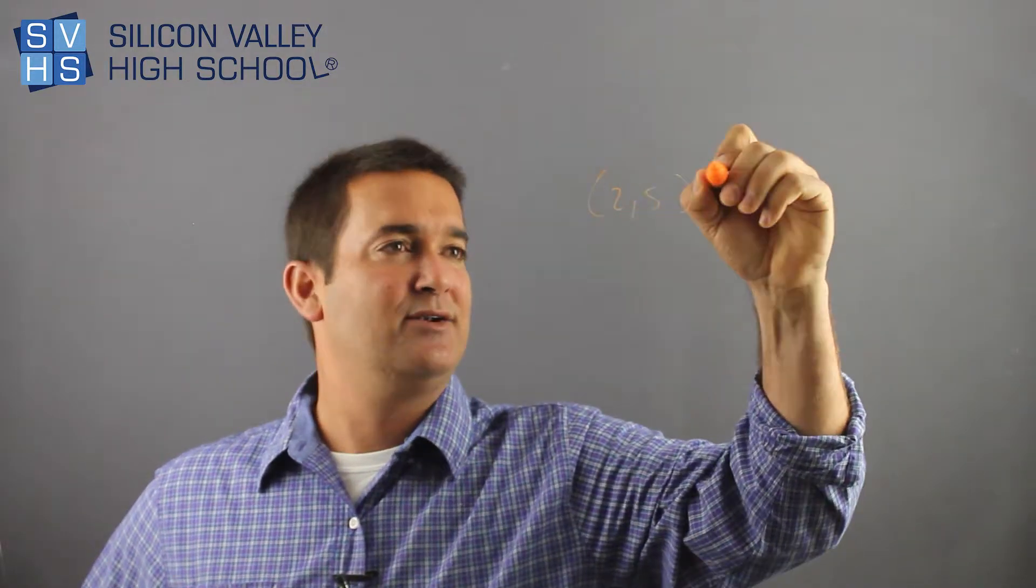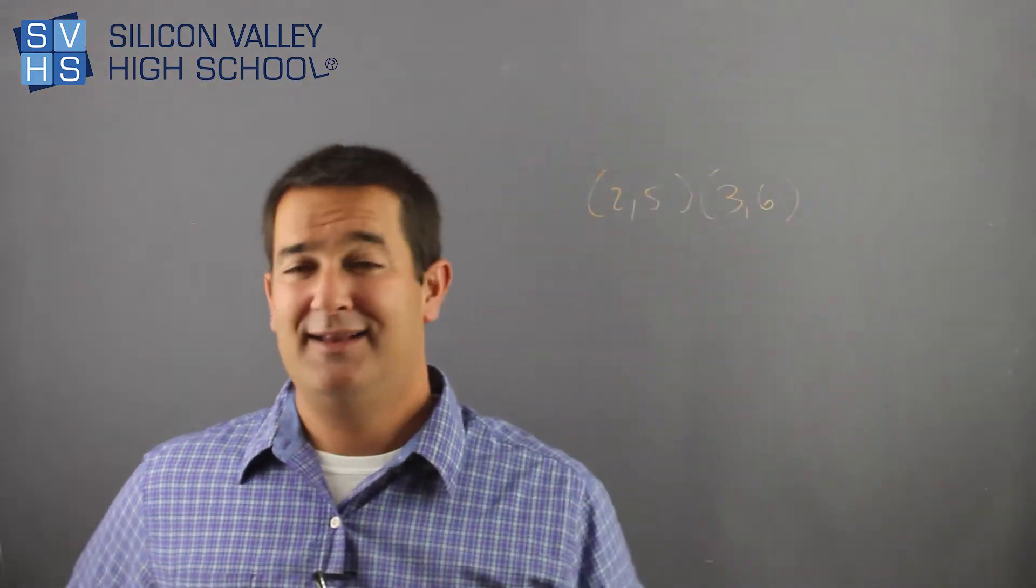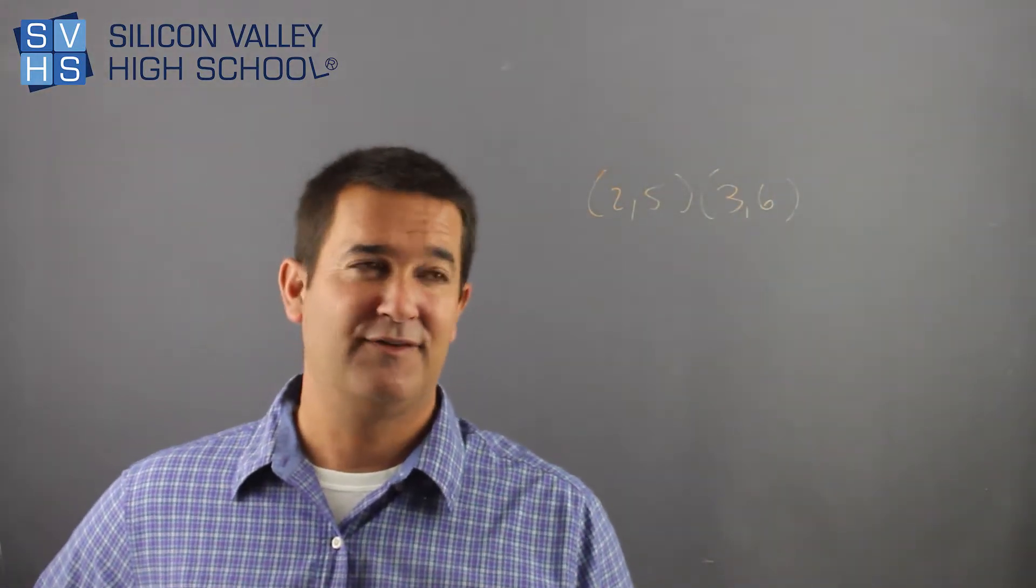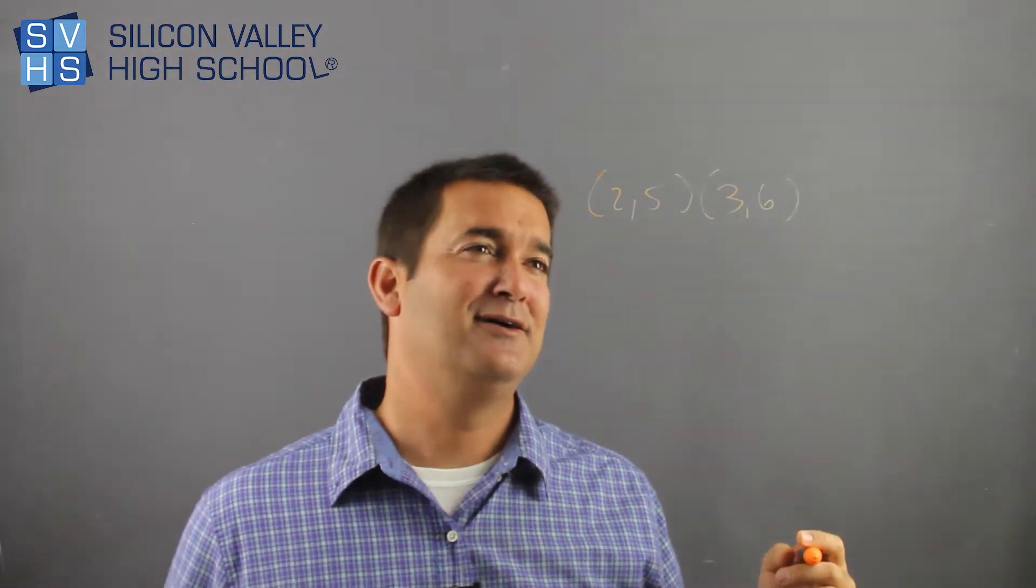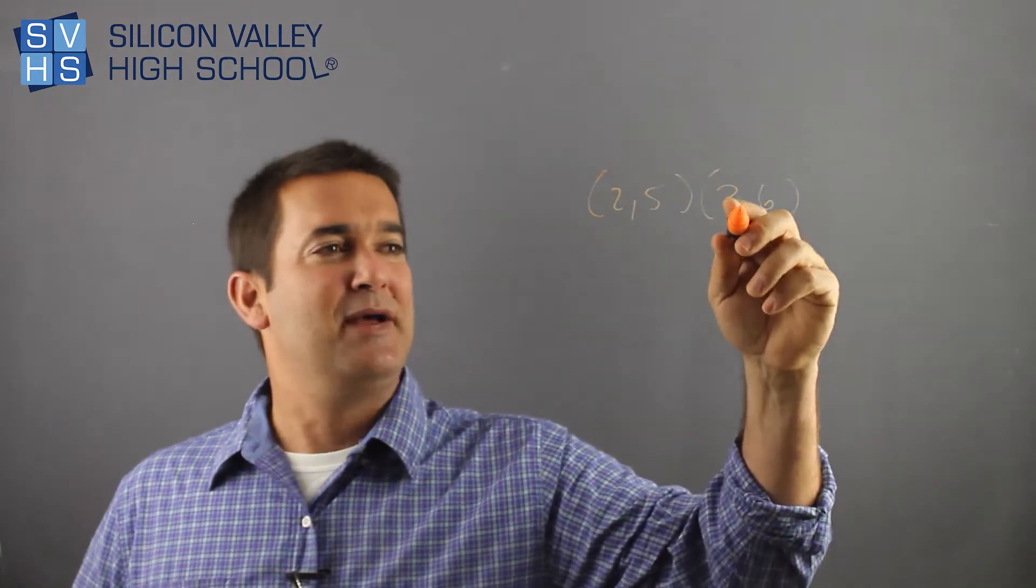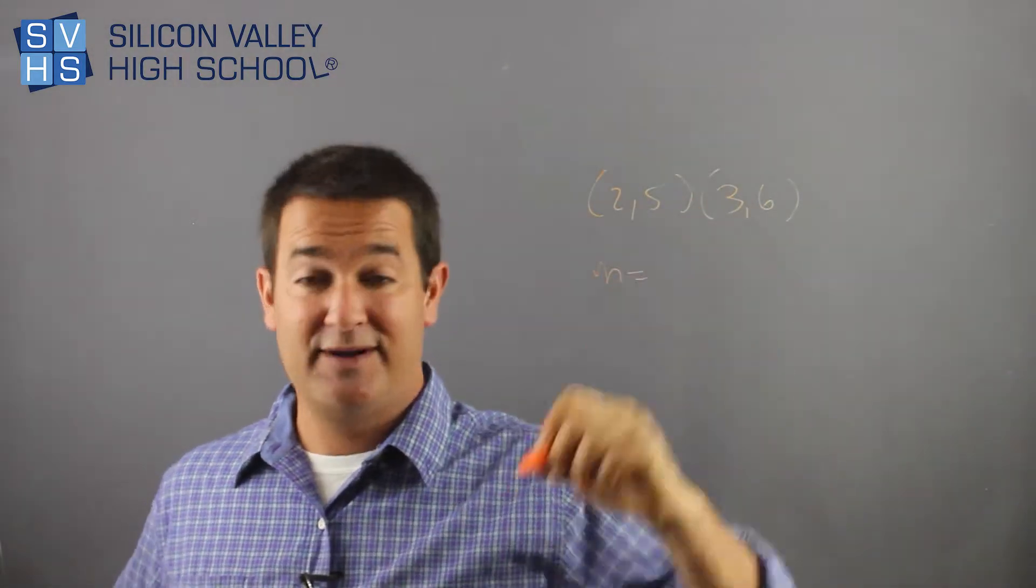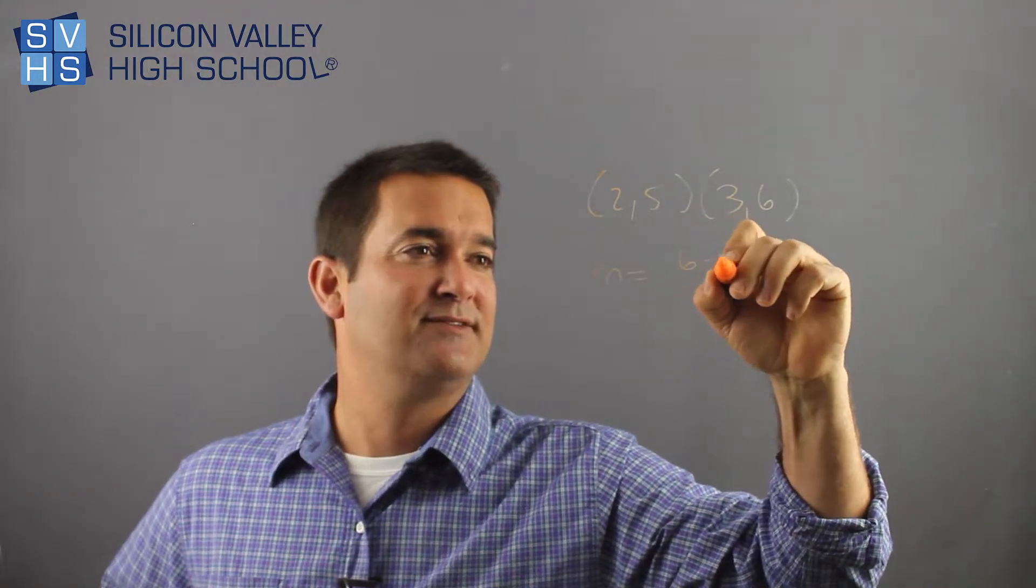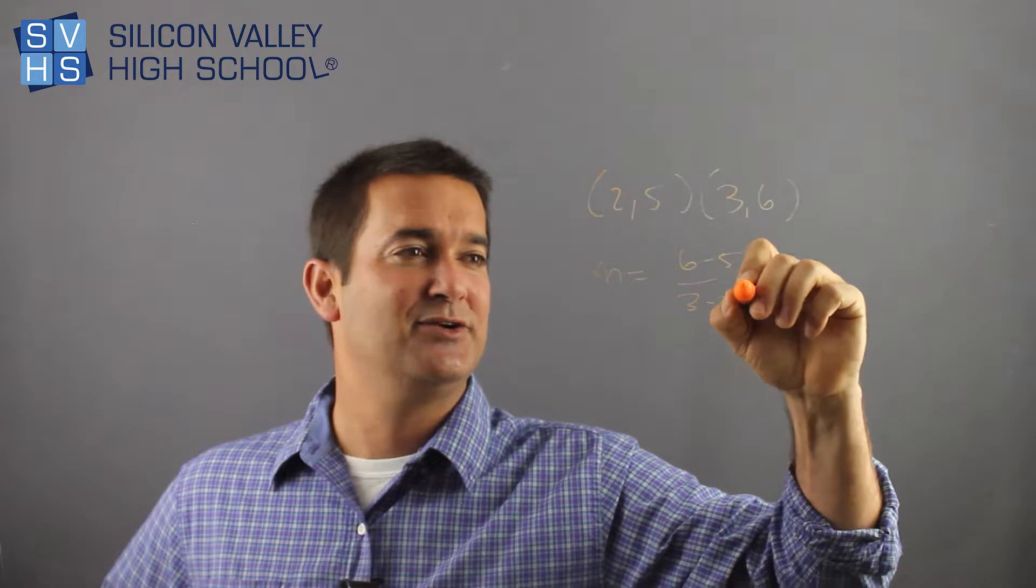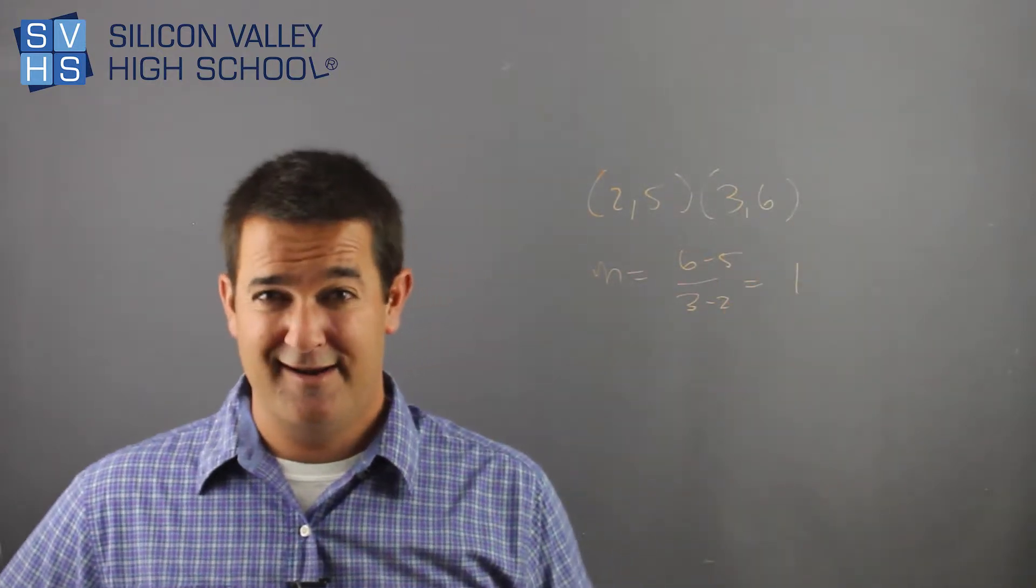If they gave you a different form and told you to change it, that's what we just mastered. But what if they just give you a fresh problem and say put this in standard form? I would do it in whatever form you like first, so I would do this in maybe point-slope form or maybe slope-intercept form. But basically, the first thing we need is a slope. And you remember from previous videos, the slope is y minus y, six minus five, over x minus x, three minus two. So this slope is one.